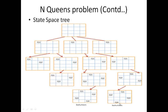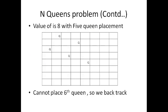This is the state space tree covering all possible solutions for the 4-Queens problem. Next, we apply the same approach to the 8-Queens problem, where the value of N is 8 and we use an 8×8 chessboard.